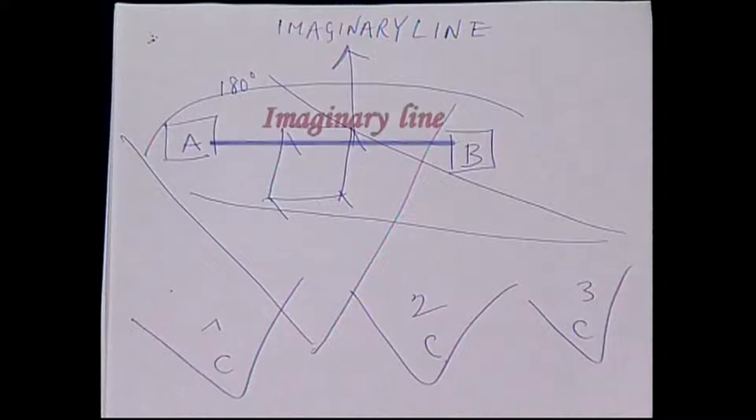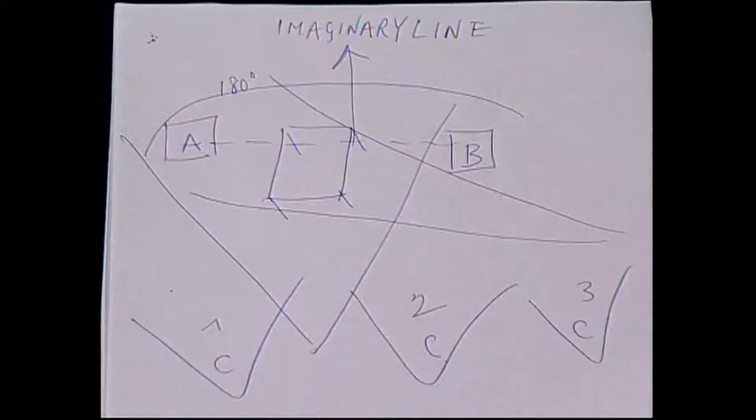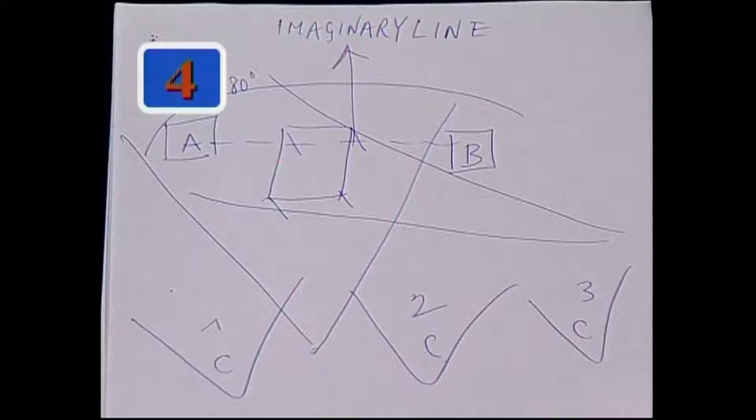The moment I cross the 180-degree line — that is, I move into 240 degrees or 300 degrees and take a camera position there — A was to the left of B will suddenly become A to the right of B, and will completely disorient the spectator. They were seeing a character sitting in a particular way, and suddenly they see the character sitting in a different way. The character is still sitting in that way, but because I changed the camera, it seems like a continuity jerk.